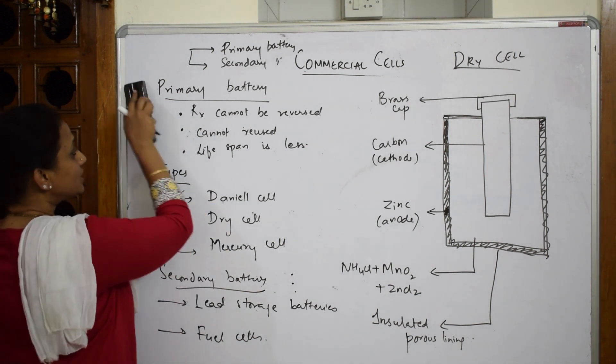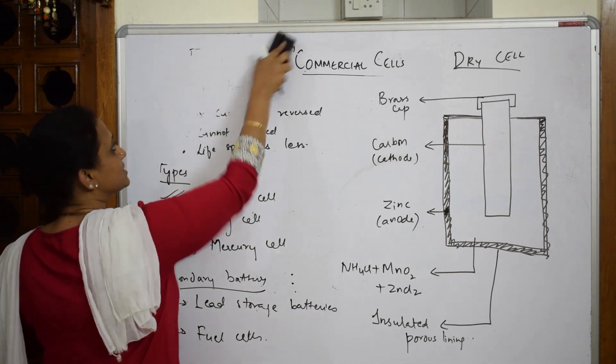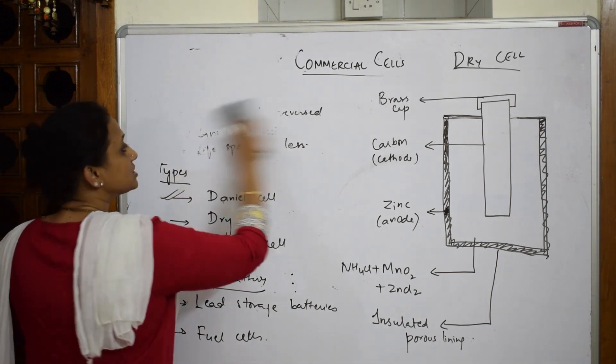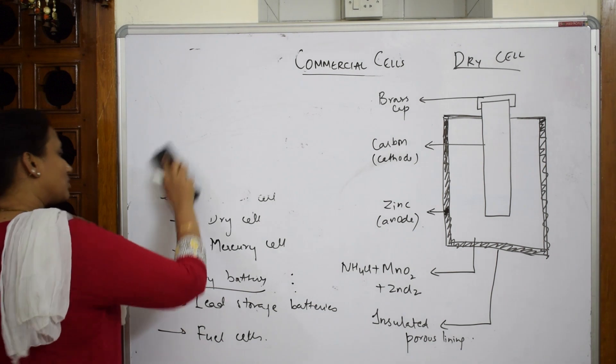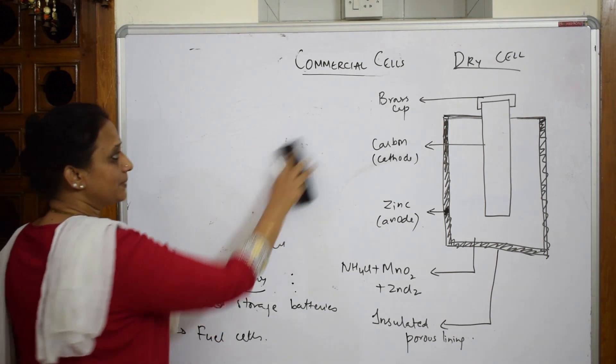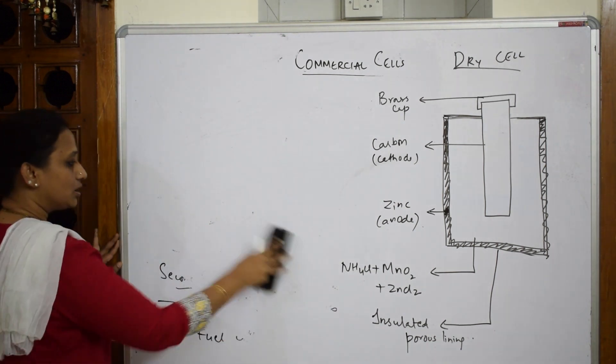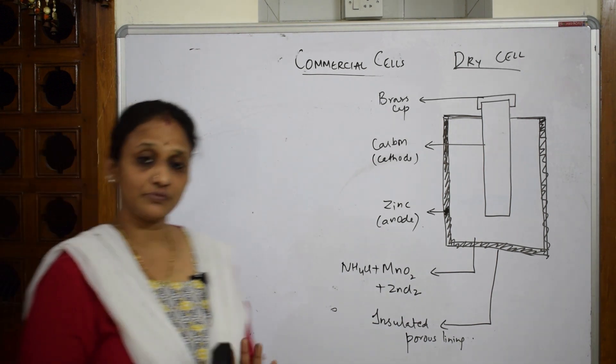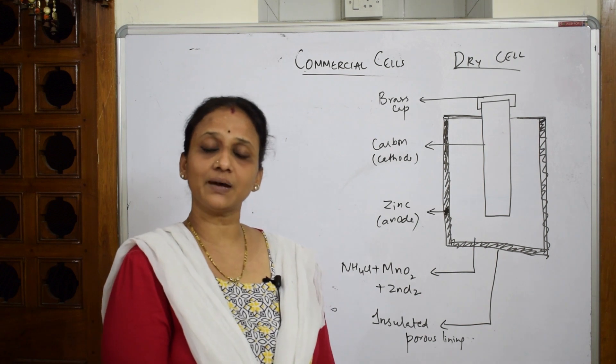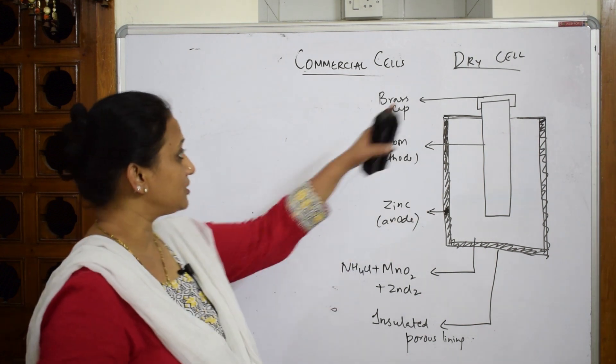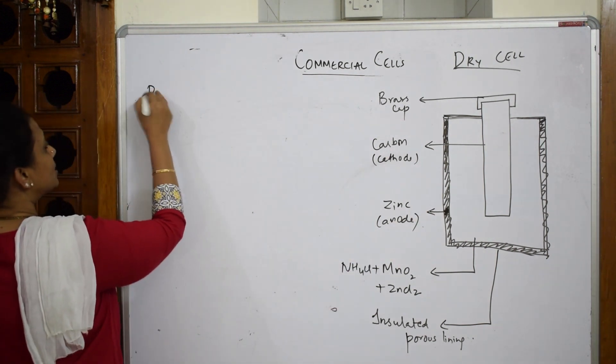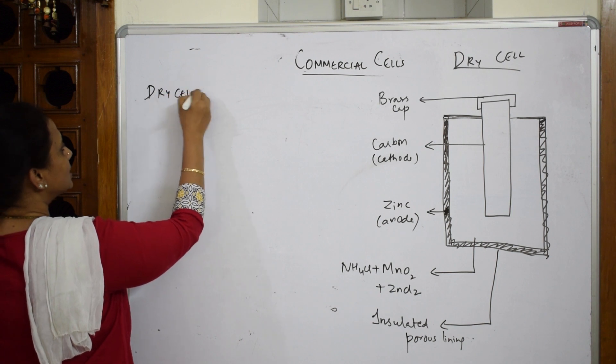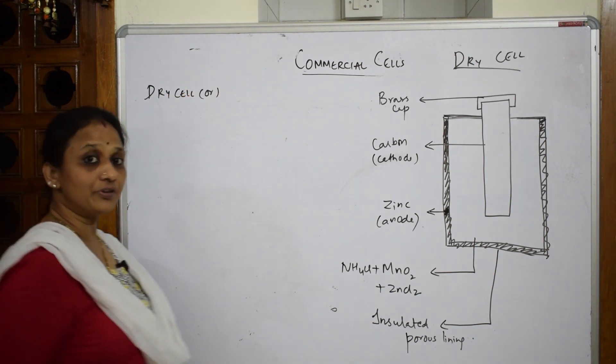When you're speaking about dry cell, the most important concept which you should remember: there are basically five parameters which you have to remember. When you draw, if you're not remembering the diagram, no problem, but cell reactions are very important. In a primary battery, the first example is dry cell, which is also called or is a form of Leclanché cell.